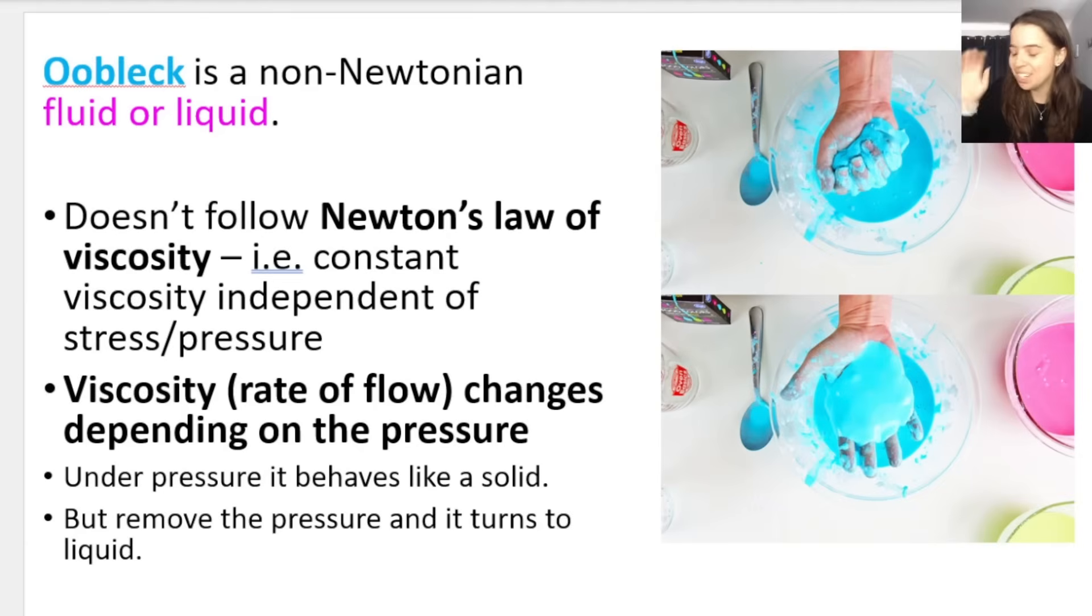We also get this really cool thing. Just as a side note, it's called oobleck. It's a non-Newtonian fluid or liquid. And the state of matter that it's in, so whether it's more solid or whether it's more liquid, depends on the pressure that you apply to the substance itself. So if I squeeze the substance, it becomes a solid. If I relax the pressure, if I remove the pressure, it turns into a liquid. Let me know in the comments below if you'd like me to make some of this on my YouTube channel.